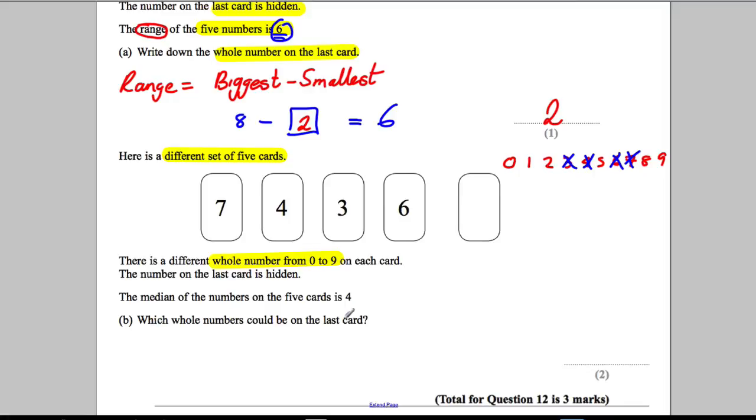Which whole numbers could the last card be? Now in order to work out the median of something, you've got to put them in order from smallest to biggest. So let's put them in the order we've got here. So we've got a 3, we've got a 4, we've got a 6 and we've got a 7.